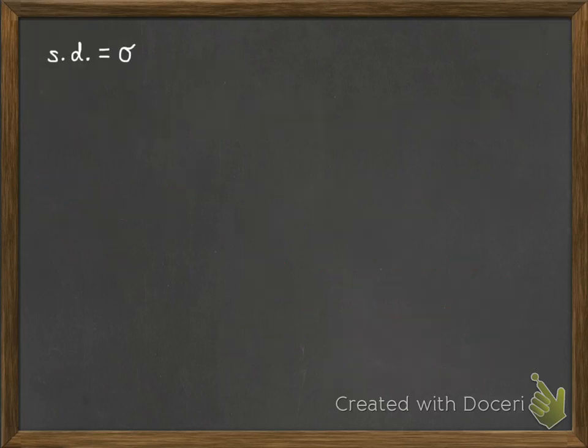Now standard deviation often gets shortened to s.d., or the symbol that's used to represent standard deviation is this lowercase sigma here, which is just a circle with a little flick at the top. So just rewriting that formula for us there.